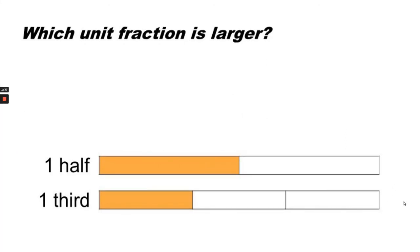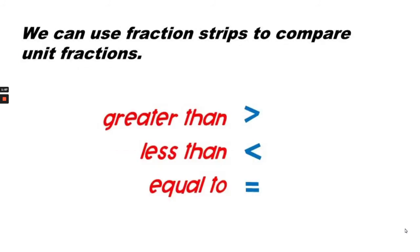So which unit fraction is larger? One half is larger than one third. One half is split into two equal pieces, and one third is split into three smaller equal pieces. We can use fraction strips to compare unit fractions.